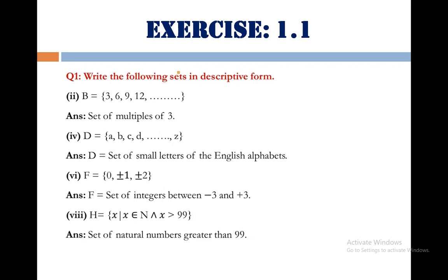Point number 4, set D equals A, B, C, D, so on, up to Z. Its answer in descriptive form is set of small letters of the English alphabets.